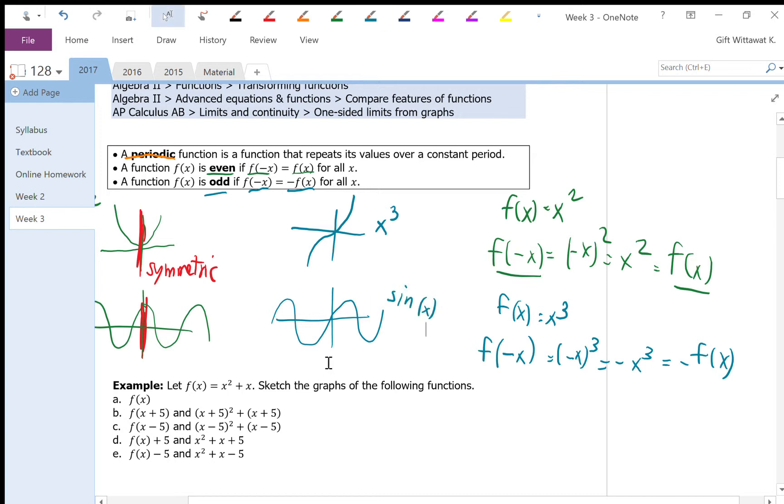So the graph for the odd function will have the characteristic that when you rotate the graph 180 degrees over the origin, you will get the same graph.